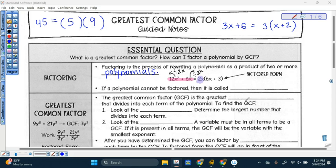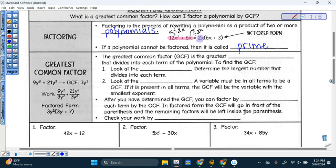If a polynomial cannot be factored, it is called prime. And I'll show you some examples of this.